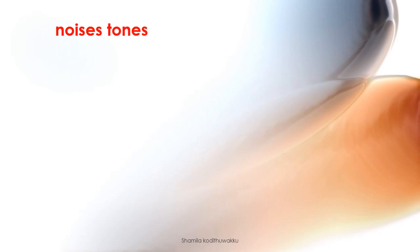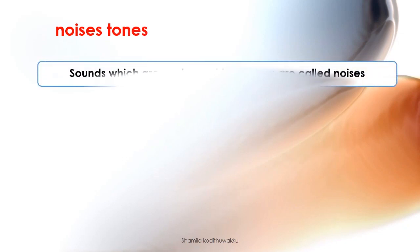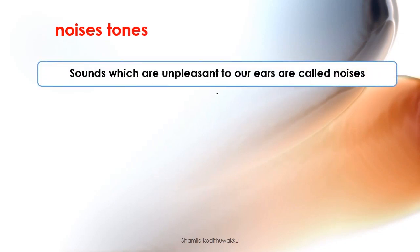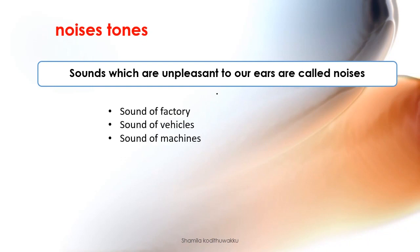Sounds which are unpleasant to our ear are called noises. Examples of noises include sounds of a factory, sounds of vehicles, and sounds of machines. Noises are produced by non-formal vibrations.